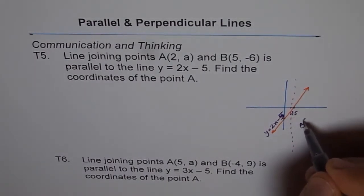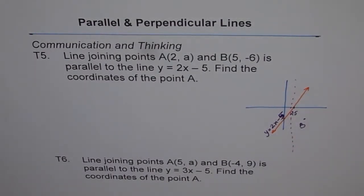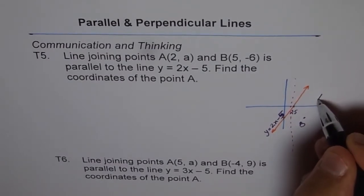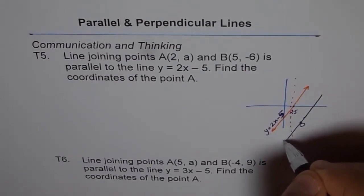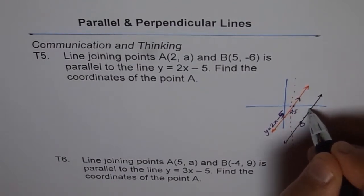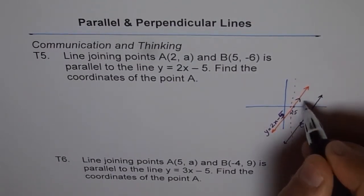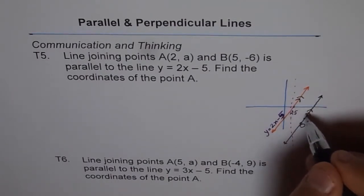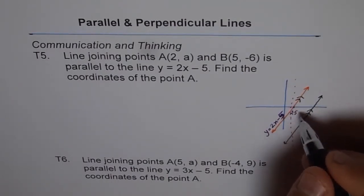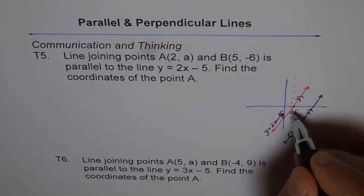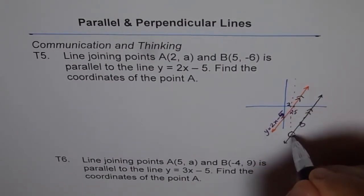If I draw a line parallel to this, and these two lines are parallel, then their slopes will be the same. Point A, which has x-value of 2, is somewhere here, and we can find its y-value.